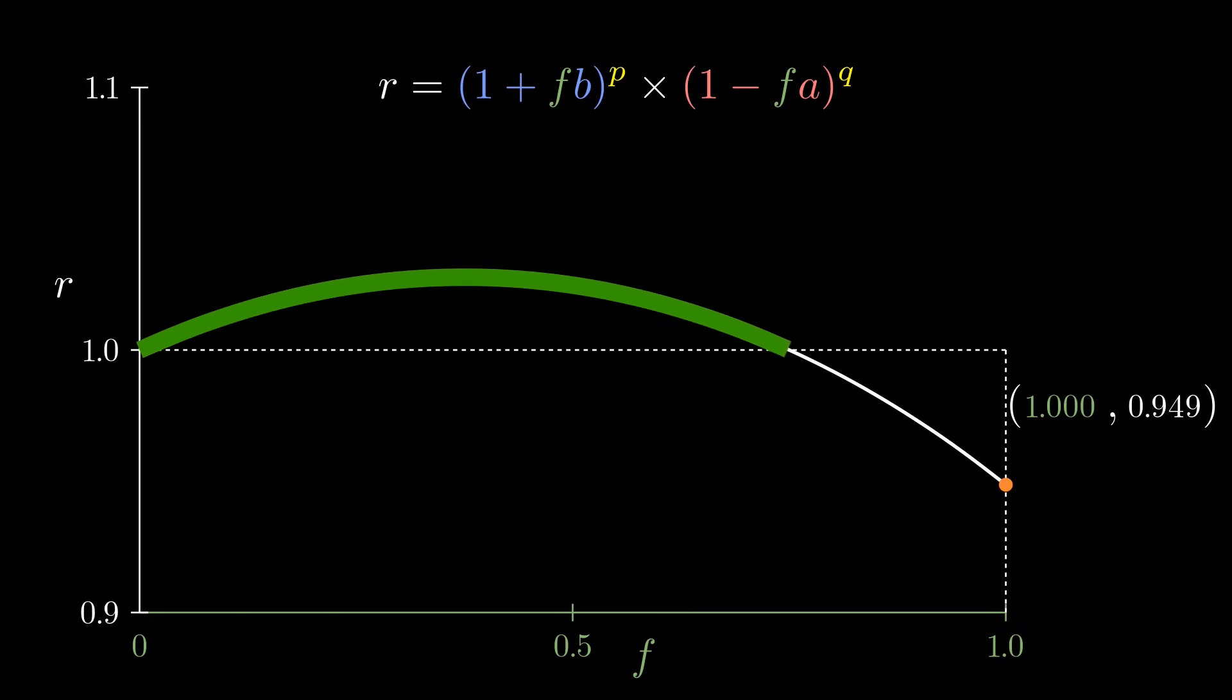However, in this highlighted segment, we're gaining money. Highest growth rate occurs where this curve's slope is flat. We can use calculus to find where this is.